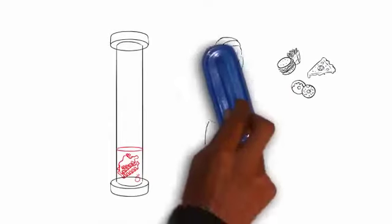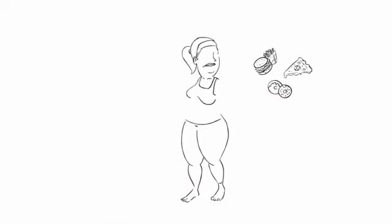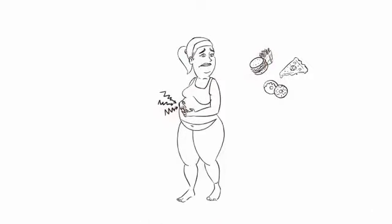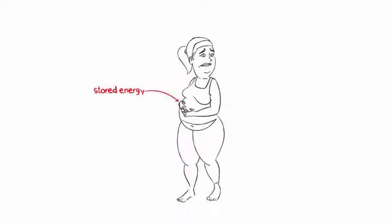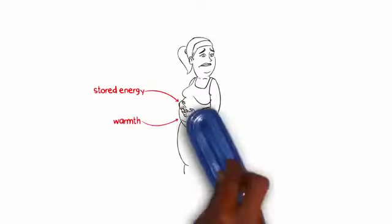Why? Because leptin's main function is to protect your body against starvation, and in the midst of decreased food intake, like dieting, your body unfortunately views your stored body fat as a huge asset to survival. After all, body fat provides a vast supply of stored energy and warmth, both highly valued resources when food is in short supply.